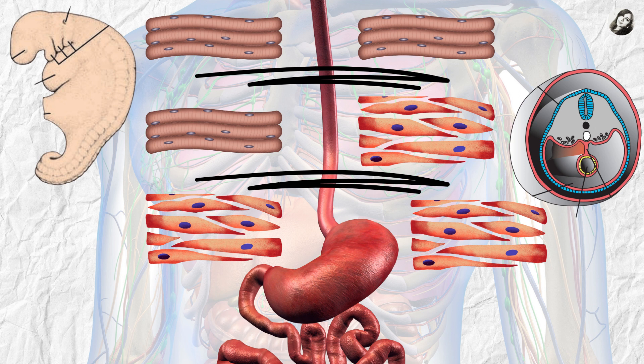At first, the esophagus was very short — a tiny little tube. But with the descent of the heart and lungs, the tiny esophagus lengthens rapidly and ultimately becomes the long muscular tube that we know.